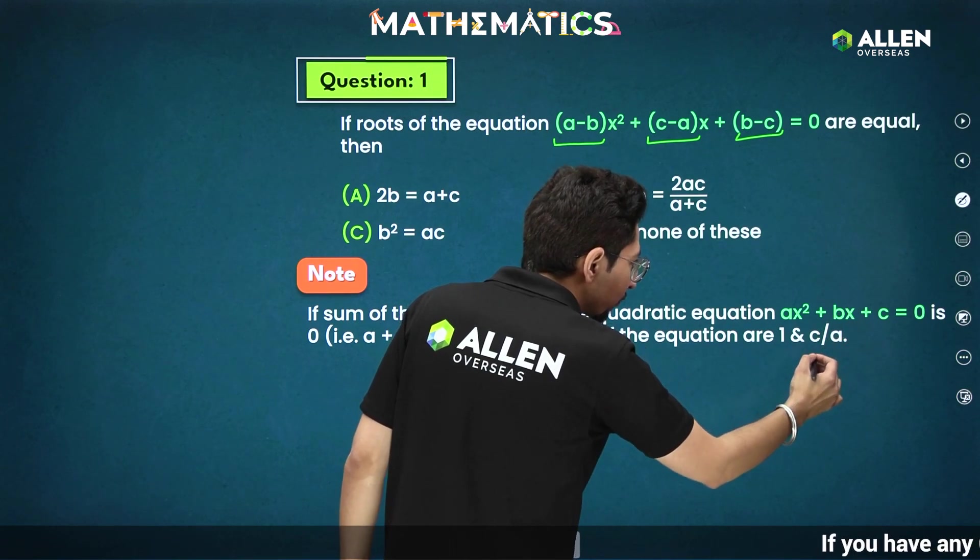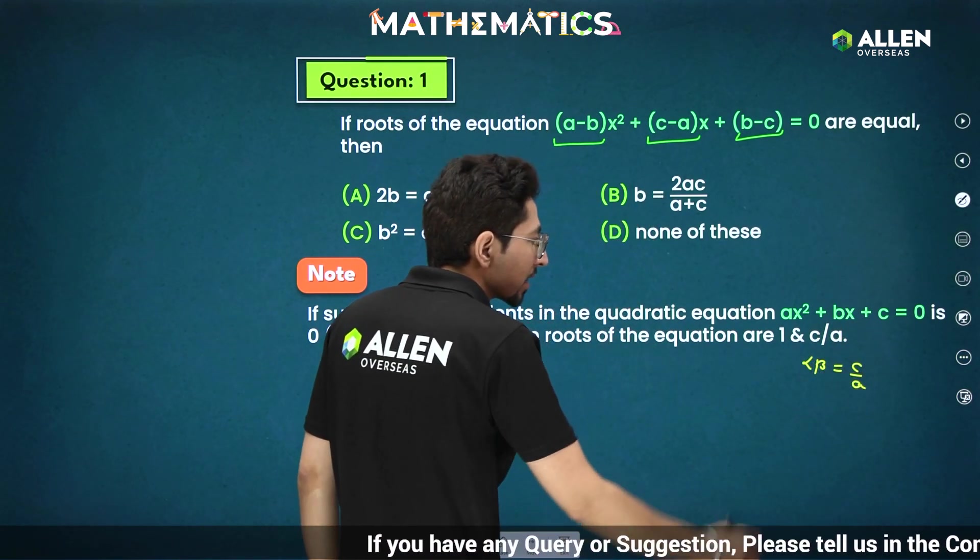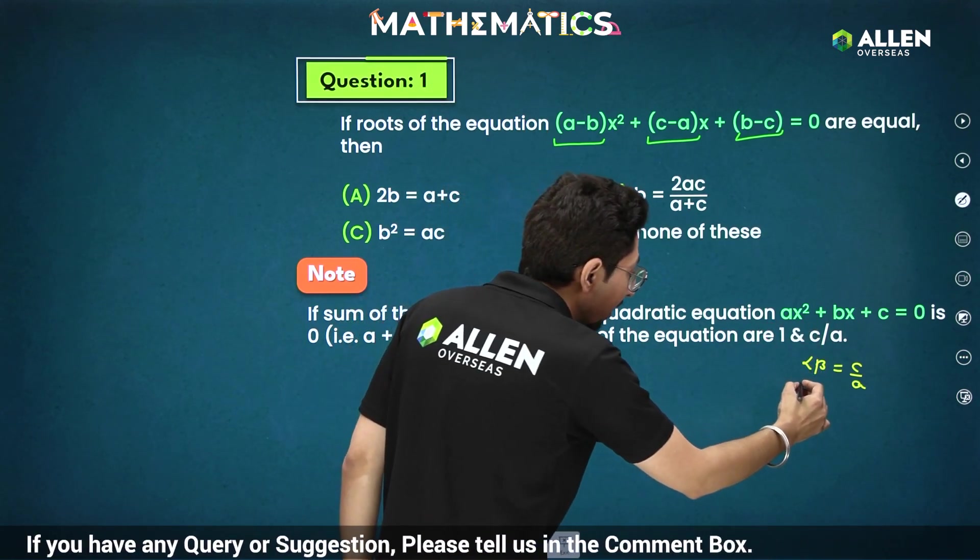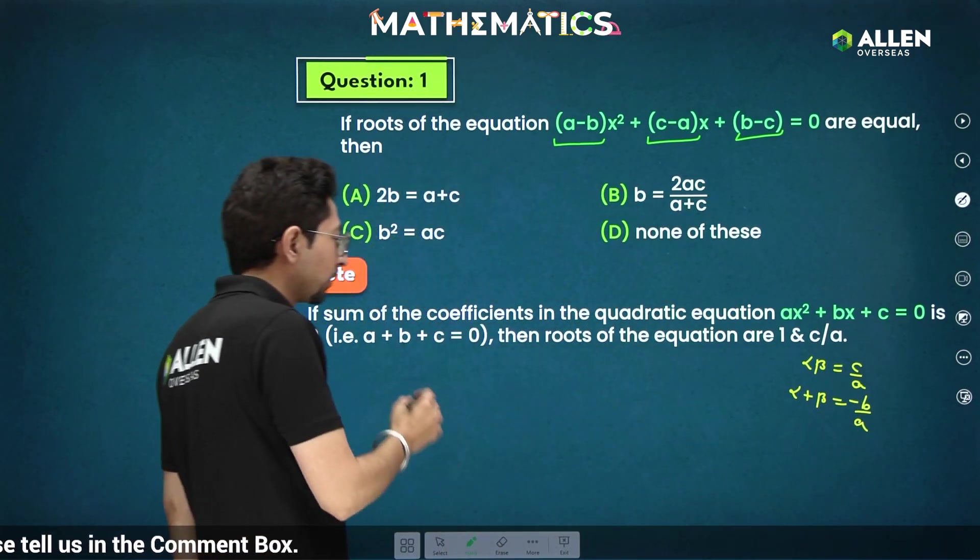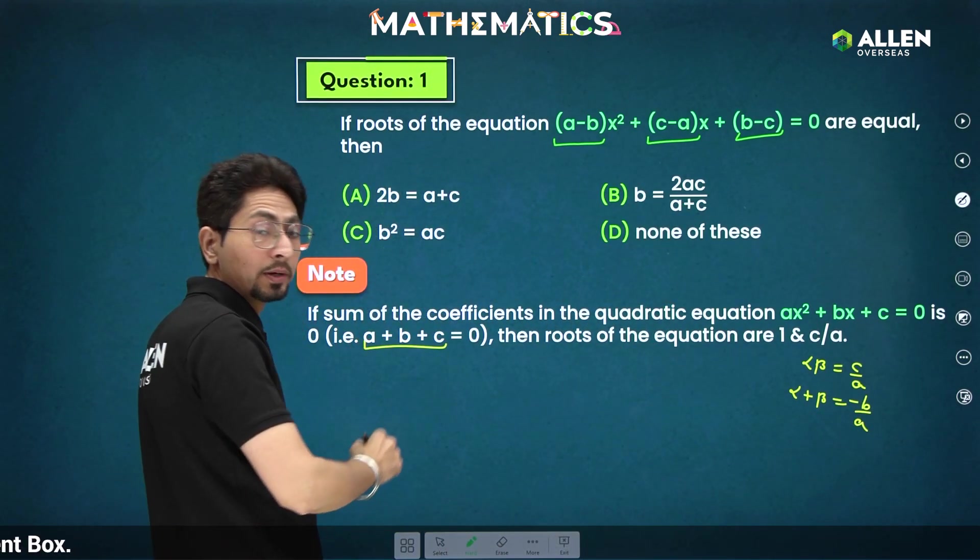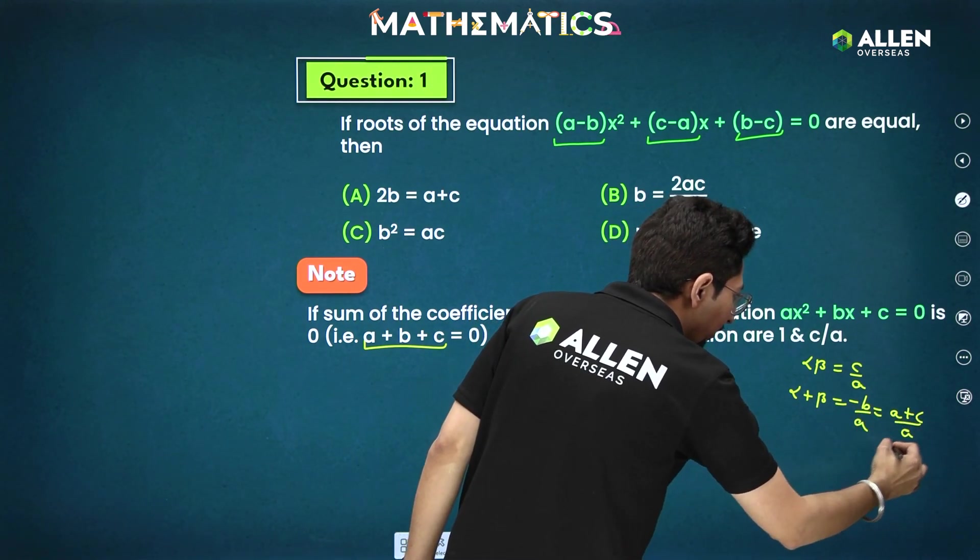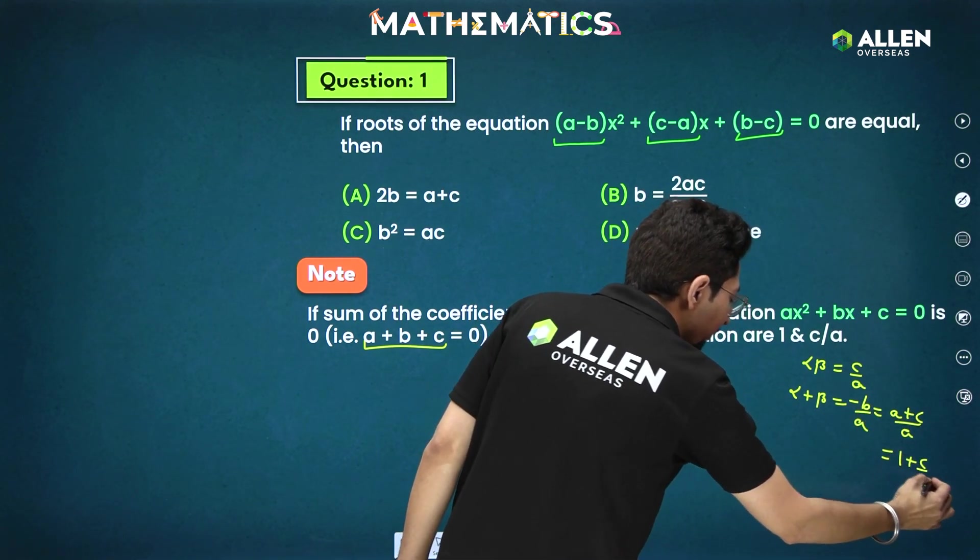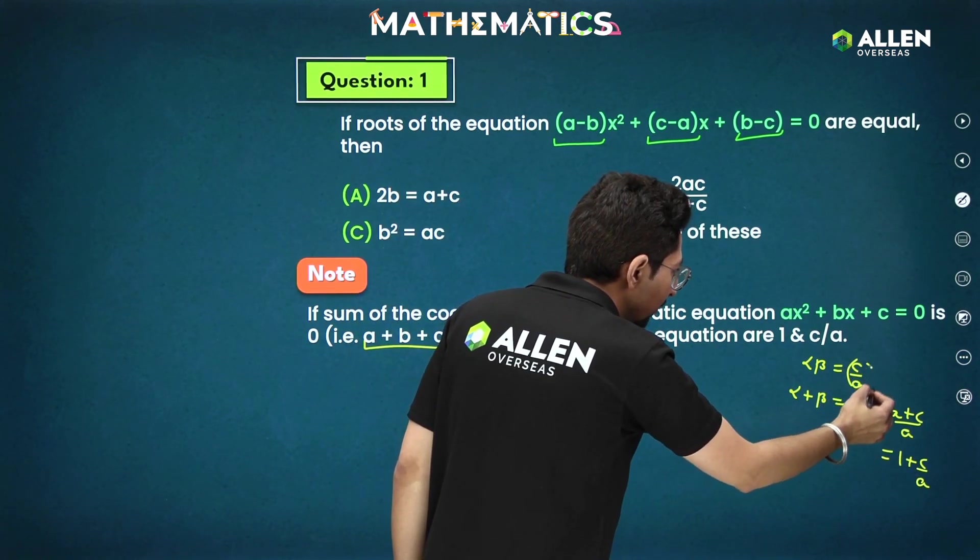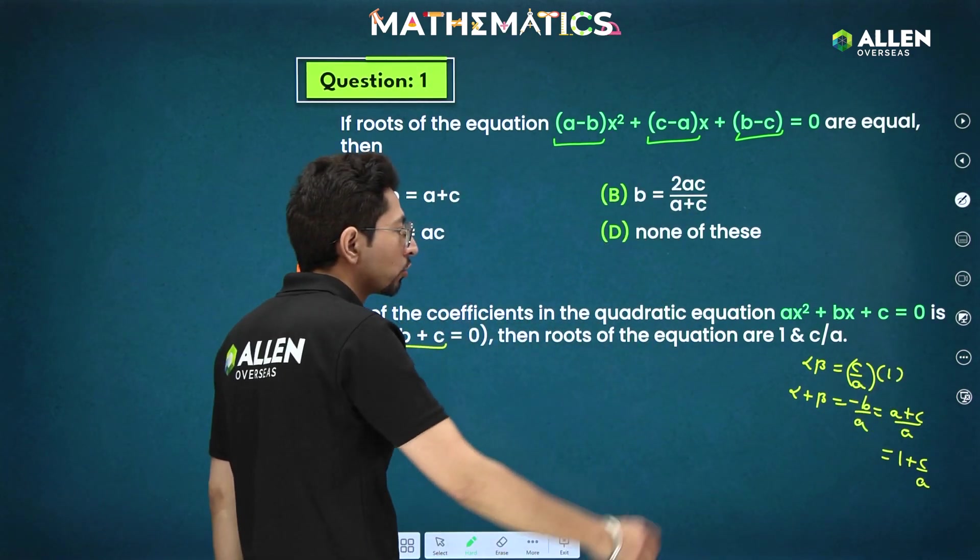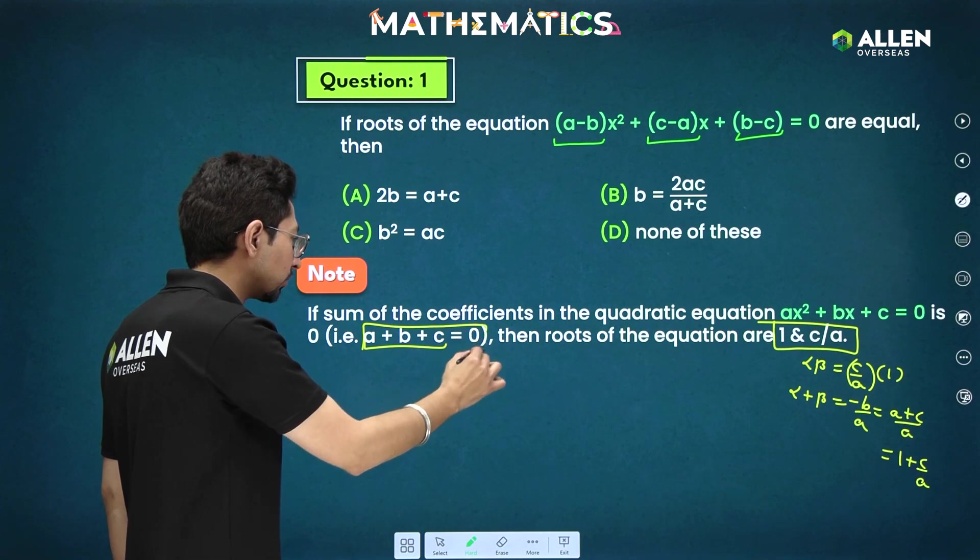How you can check it here only? What will be product of roots? Alpha into beta. That will be c/a only. And what will be sum of roots? Alpha plus beta. That will be -b/a. So, what is -b if a + b + c = 0? Minus b will be a + c only. This will be (a + c)/a or you can write 1 + c/a. So, sum of roots clearly we can say one root is 1, another is c/a. Product of roots will be 1 and c/a if sum of coefficients is 0.